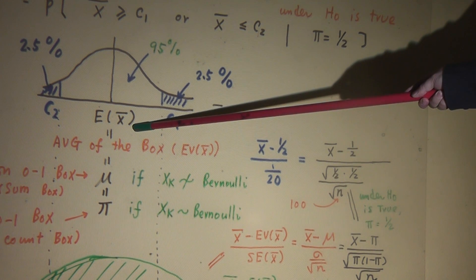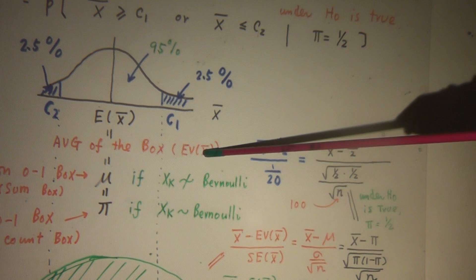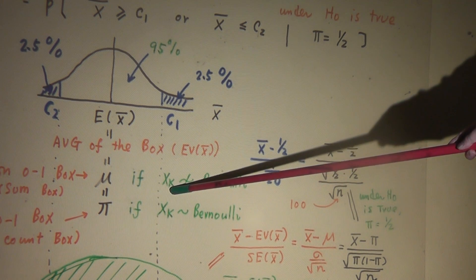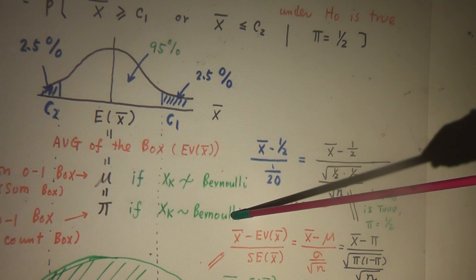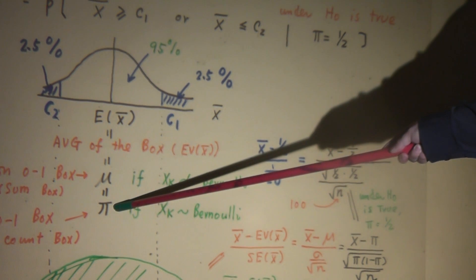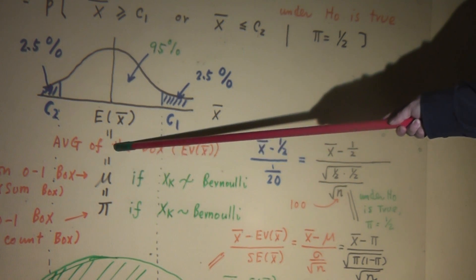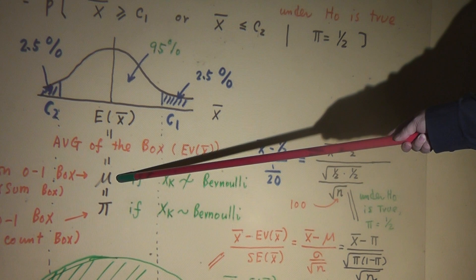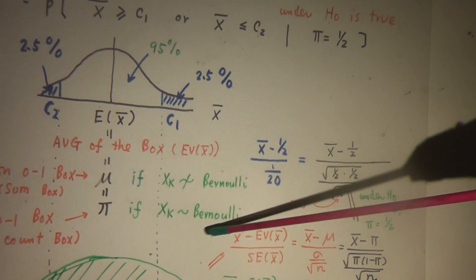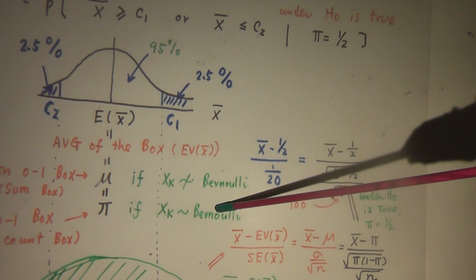The center of the normal curve is E(X̄). And E(X̄) is the average of the box — the expected value of X̄ is the population mean. If X_k follows Bernoulli, then the expected value of X̄ is the population percentage. In introductory statistics, they say mu — average of the sum box is the population mean, and average of the count box is the population percentage. This is used for a higher-level statistics course — Bernoulli and not Bernoulli.